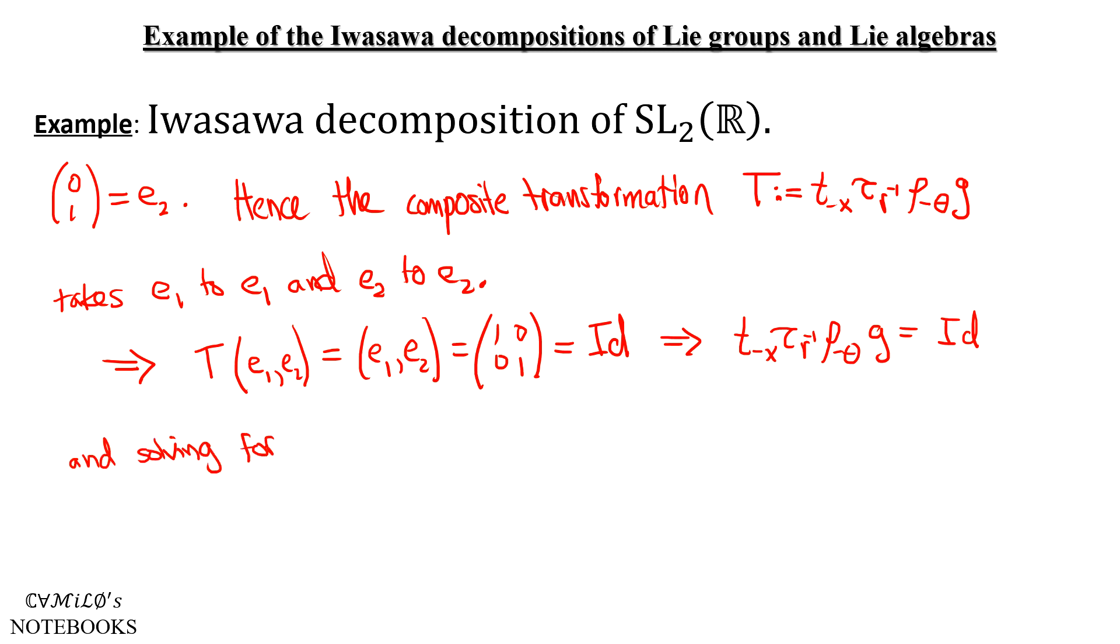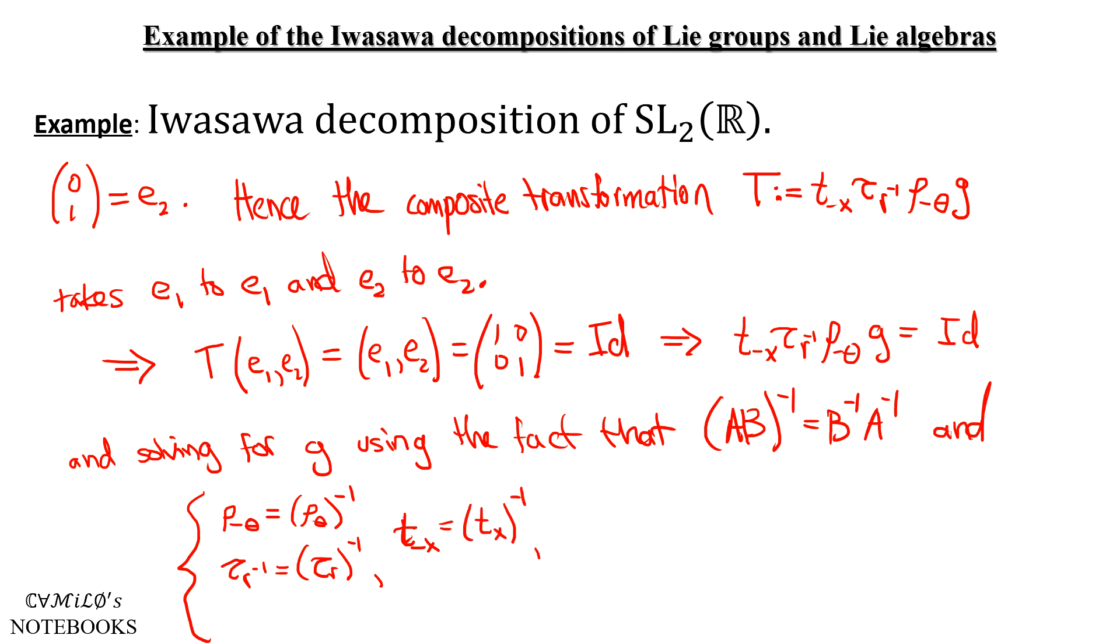And so using properties of the inverse of matrices and the inverse of a product of matrices, and the formula for the inverse of a square matrix, we get these three inverses work out really nicely to just rewrite this equation as (ρ_θ τ_R T_X)^{-1} times G is the identity matrix, and then solve for G.